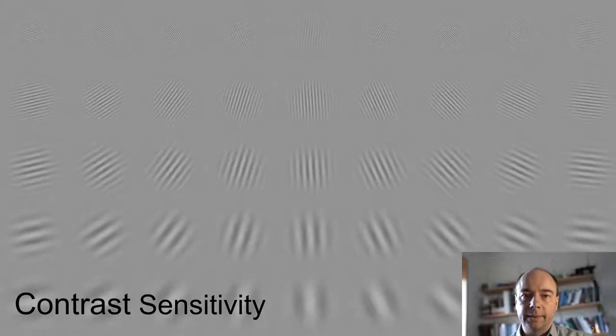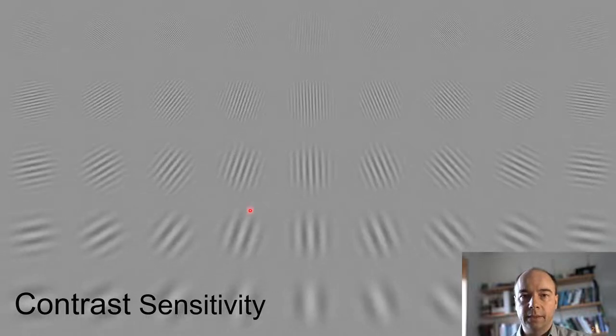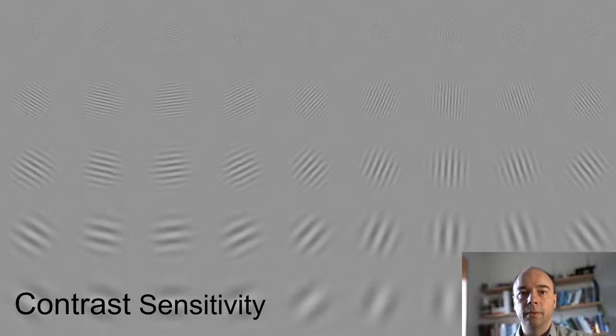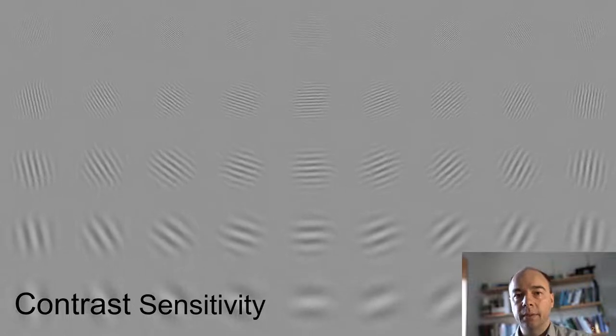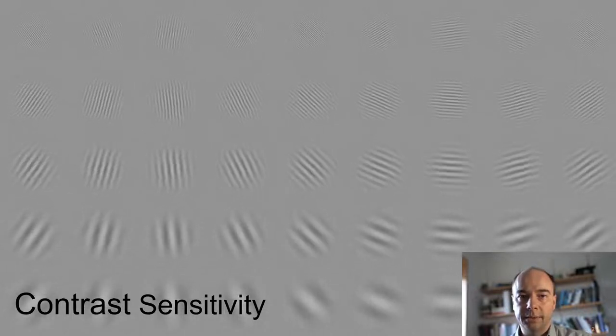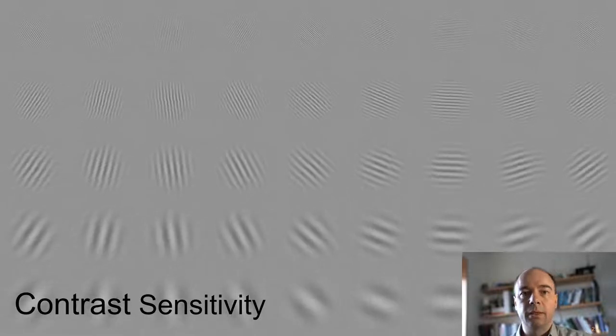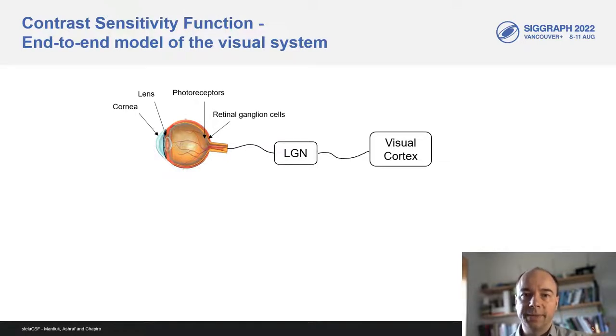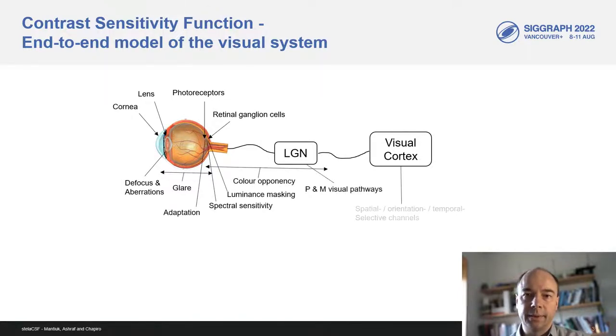Contrast sensitivity is our ability to detect low-contrast wavy patterns such as those shown on this slide. Those patterns are known as Gabors and it is believed that the visual system is tuned to such patterns. They can be considered almost basis functions for our visual system. The detection of patterns has been studied for more than 100 years, but it's still an elusive problem with no definite solution. This is because the visual system is complex. It involves multiple mechanisms, such as those listed on this slide, that are difficult to measure and also vary quite a bit between individuals.